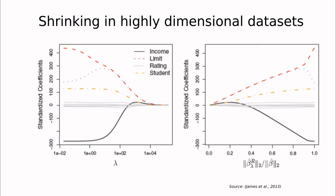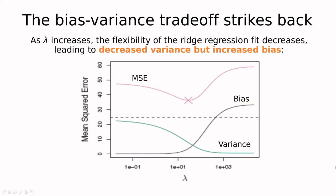In a higher-dimensional example, you can see that increasing the penalty lambda shrinks all parameters. Going too far pushes all parameters to zero, which isn't useful. But somewhere in the middle the parameters become more meaningful again. Remember the bias-variance tradeoff: increasing lambda forces all parameters into this hypersphere, and the optimal value found by cross-validation controls that tradeoff.